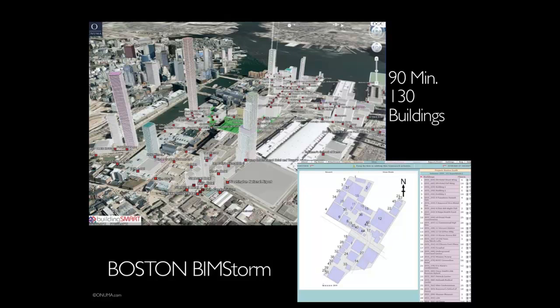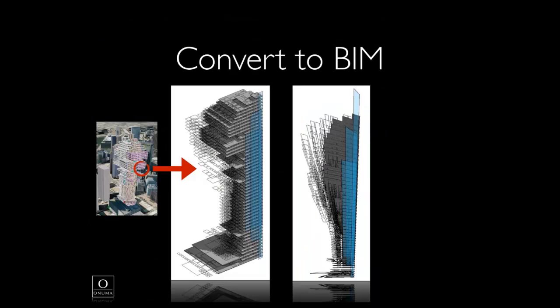You can start rapidly generating what-if blocking-and-stacking models and react to them. In BIMstorm Boston, we had a 90-minute session where the audience submitted requests through iPhones and PCs: 'I'm an owner, I want a 200,000 square-foot office building, 30 stories high, on this site in Boston.' It creates a simplified block building but it's a BIM — it has all the floors, floor-to-floor height, and use. You start running through what-if scenarios very quickly. A lot of it doesn't resolve in 90 minutes, some buildings don't fit the site, but you can then collaborate with others in the room or across the world — from a structural point of view, for example — and react to that.